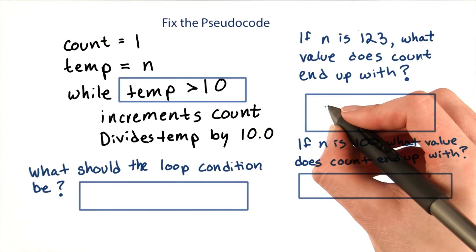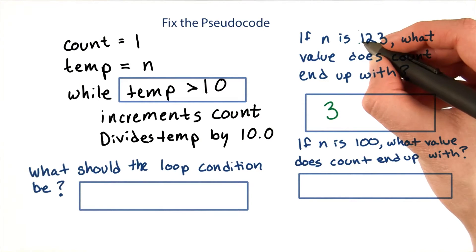If n is 123, count will end up as 3, which would be correct. There are three digits.